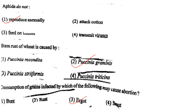Next one: Stem rust of wheat is caused by option 1, Puccinia recondita; option 2, Puccinia graminis; option 3, Puccinia striiformis; option 4, Puccinia triticicna. Answer is option 2: Puccinia graminis.